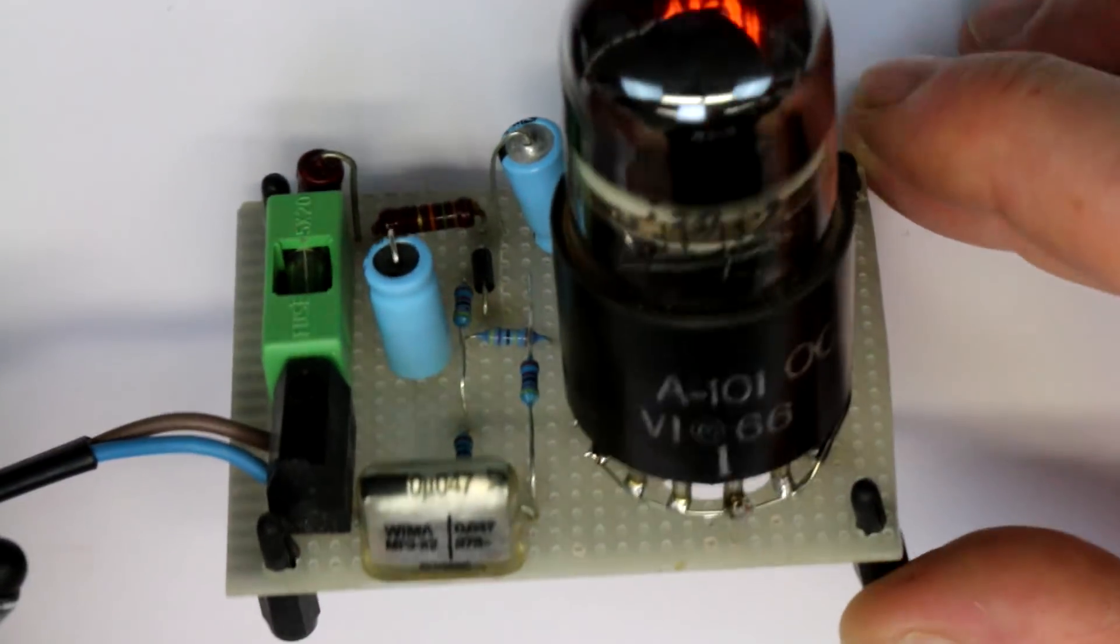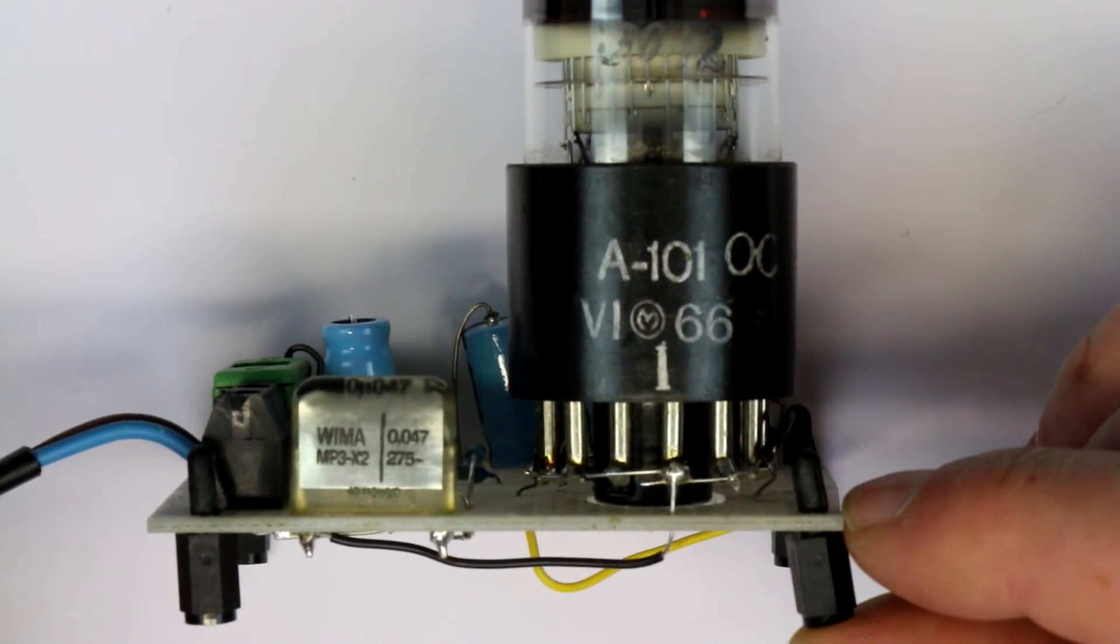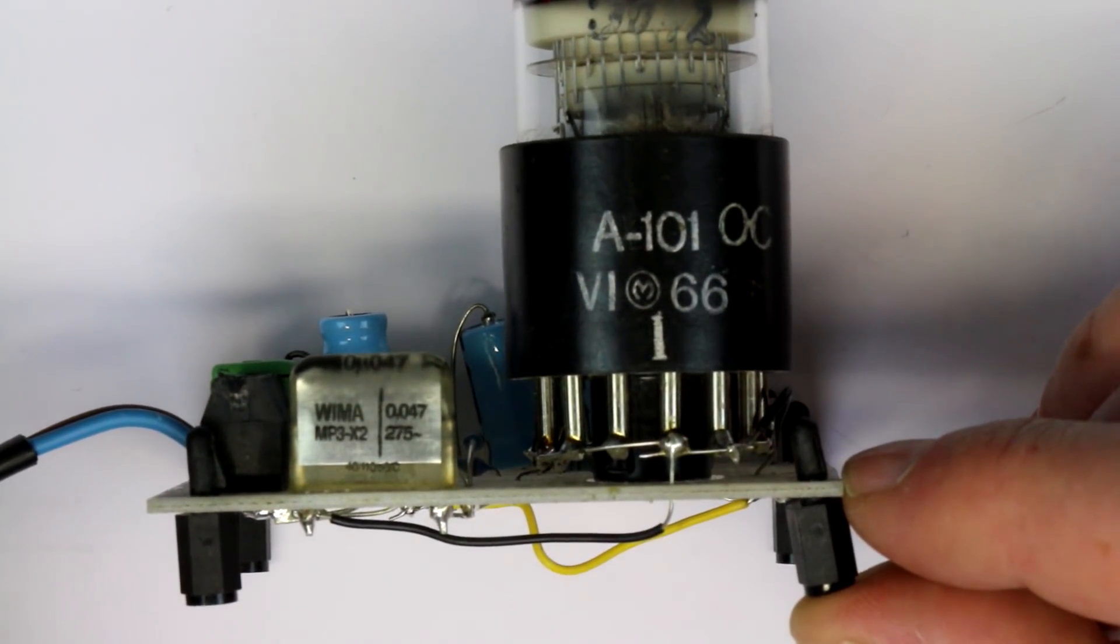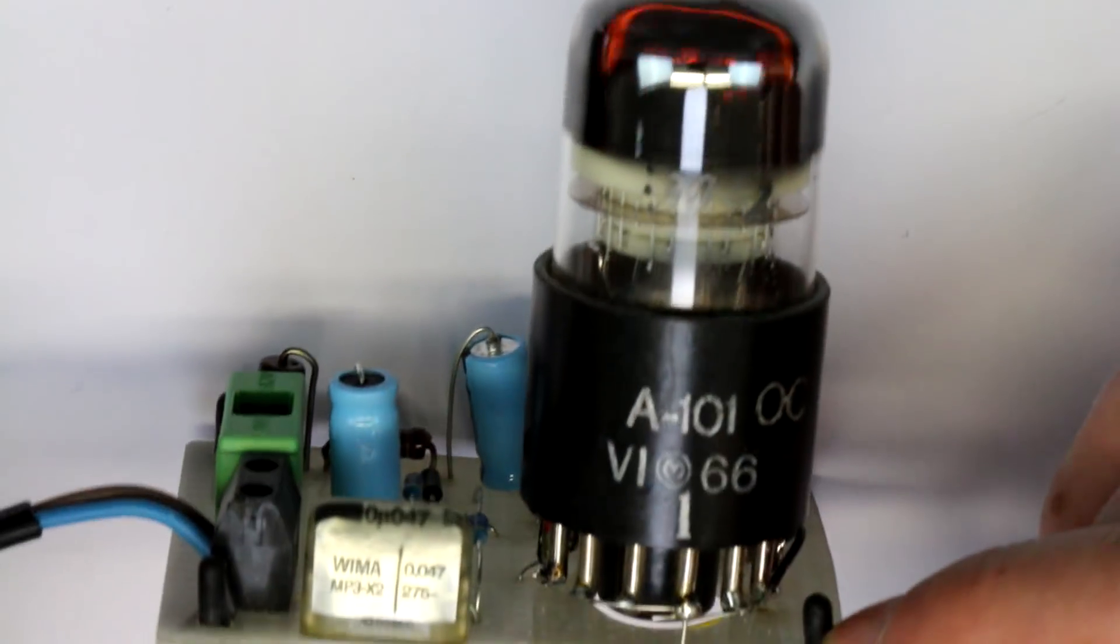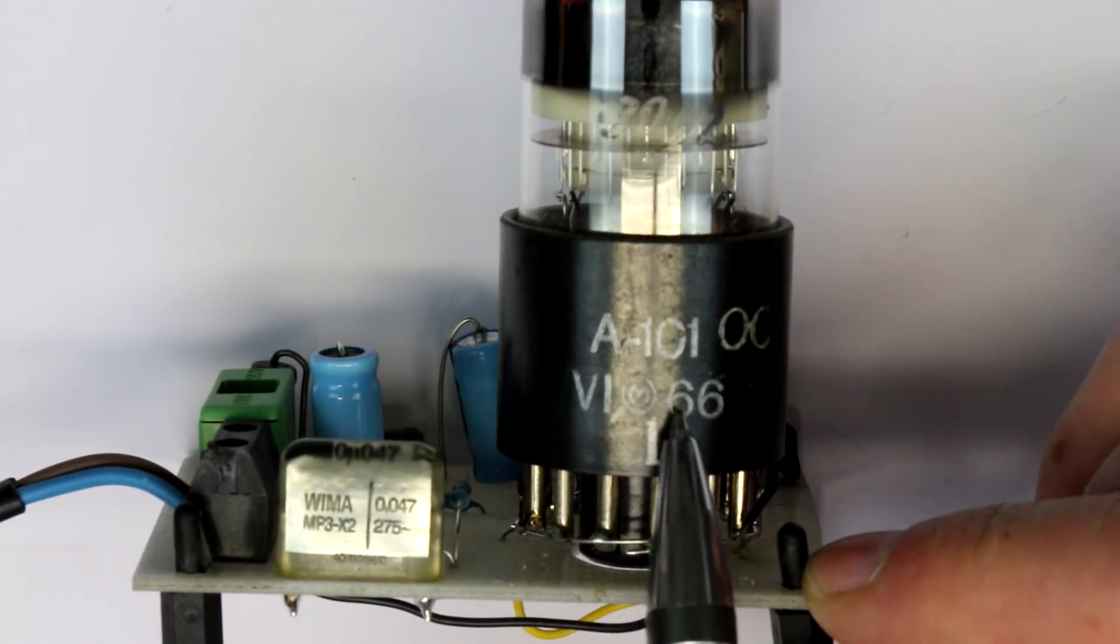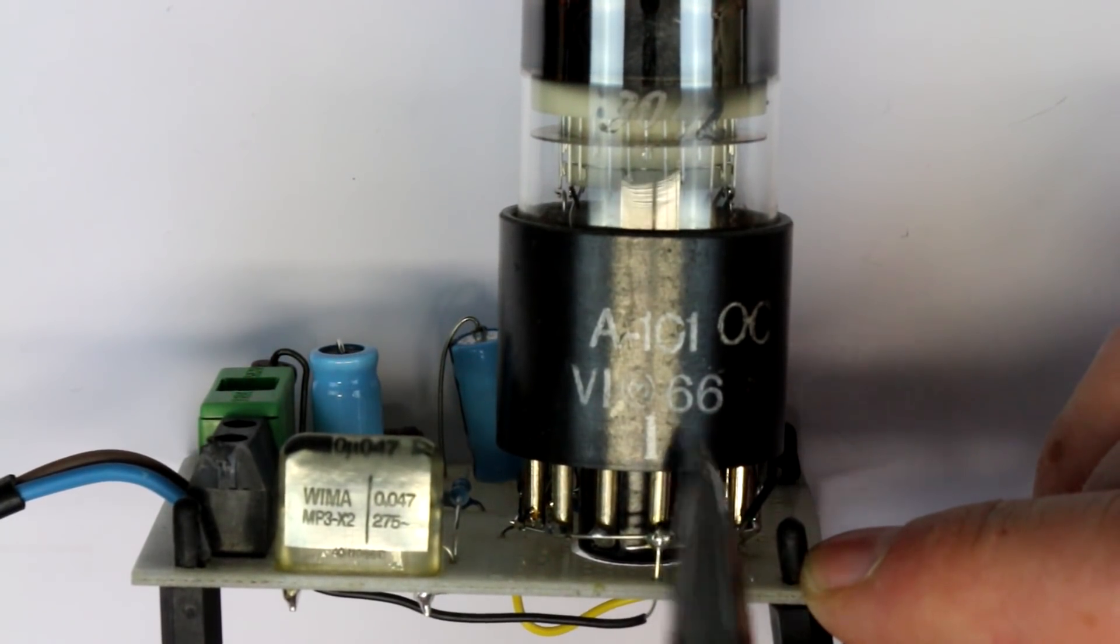This one here is a Russian type because it's the cheapest one you get from eBay, an A101 type from the manufacturing year 1966.